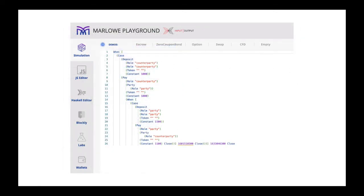Here you see a very simple contract between a party and counterparty. It involves the counterparty, who's the lender, depositing a thousand Lovelace that's immediately paid to the party, who is the borrower. Then at the end of the contract, the borrower is asked to deposit eleven hundred Lovelace, which is then paid to the counterparty. So the premium that the lender receives is a hundred Lovelace.